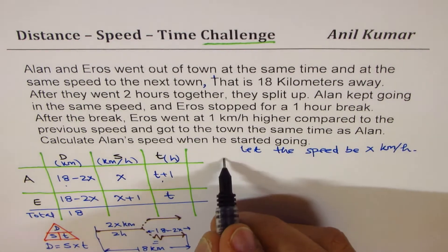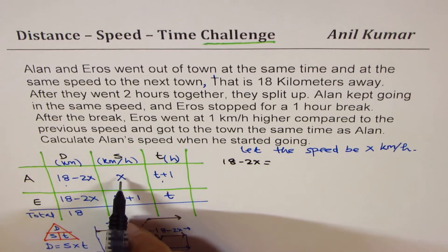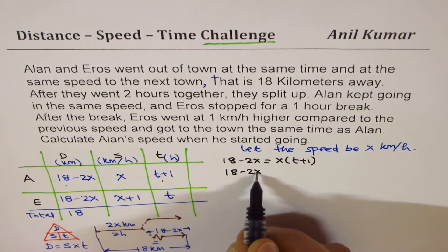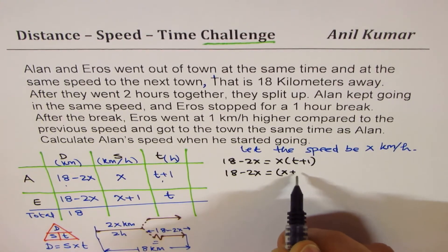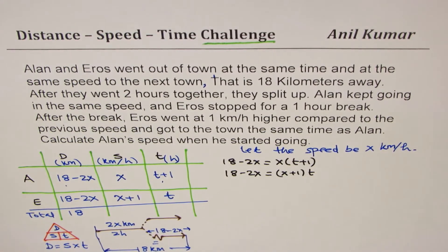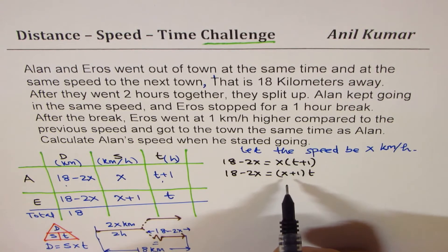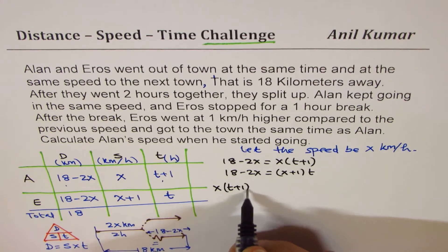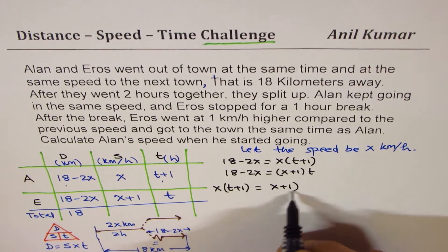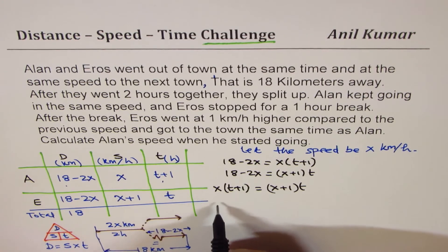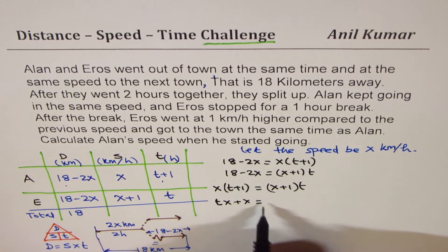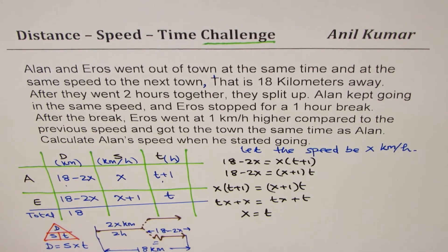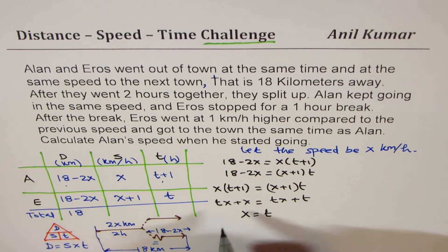This gives us two equations. Both equal 18 minus 2x, so we can equate them: x times (t plus 1) equals (x plus 1) times t. They cover the same remaining distance. Expanding the brackets: tx plus x equals tx plus t. The tx terms cancel, and we get x equals t.